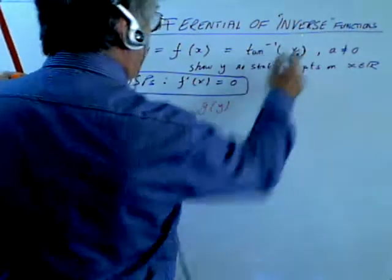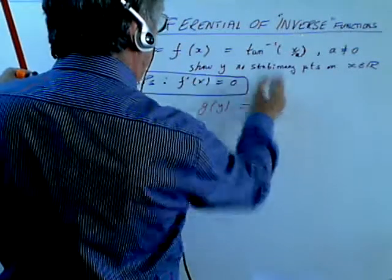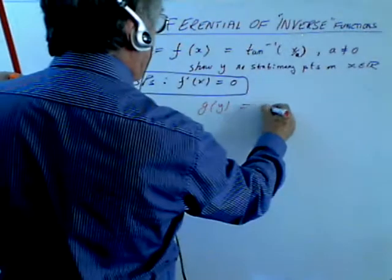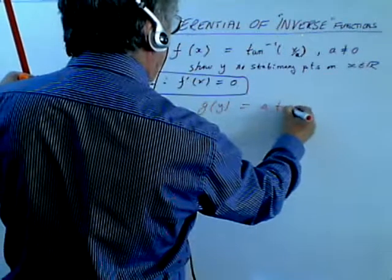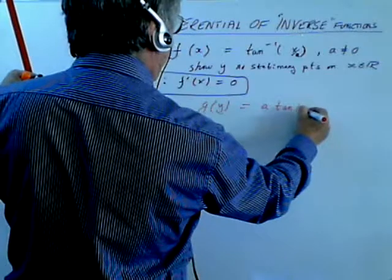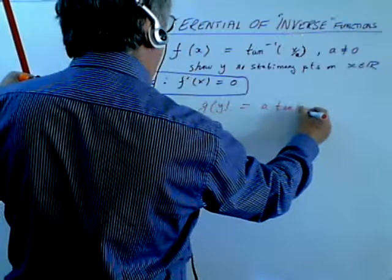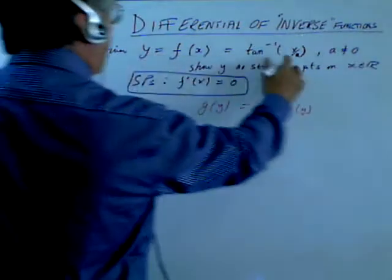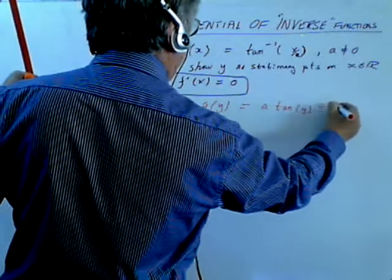G(y) is a function that will return x. So it's obviously, if I take the tangent over here, tan(y), it's x over a, so it's a times the tangent of y. Okay, so tan(y) multiplied by a and that will return x.